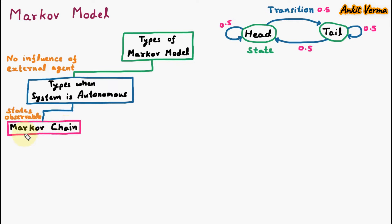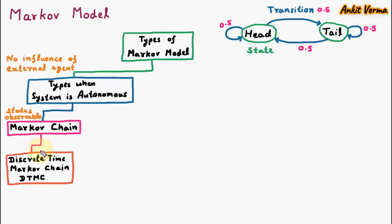There are further two types of Markov Chain. The first is Discrete Time Markov Chain, which is also called DTMC. As the name signifies, discrete time means the transition is at a fixed interval.